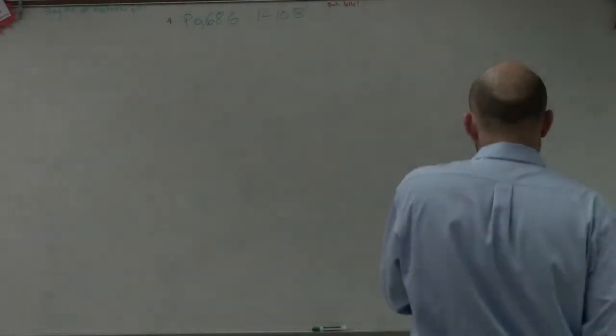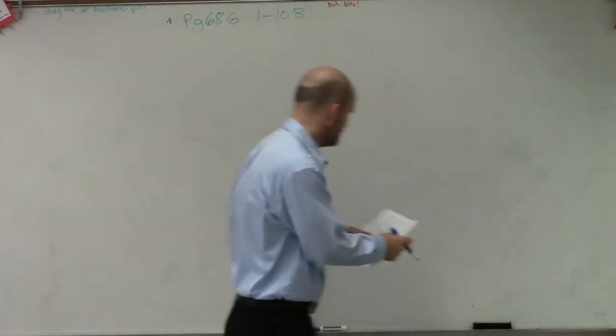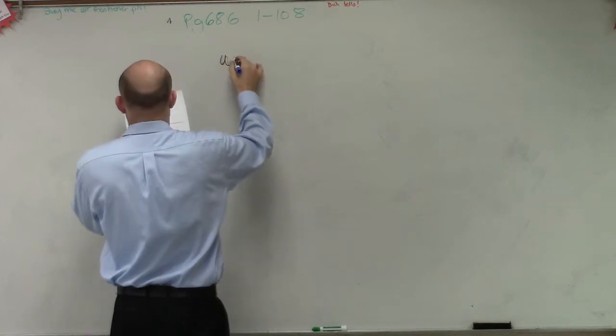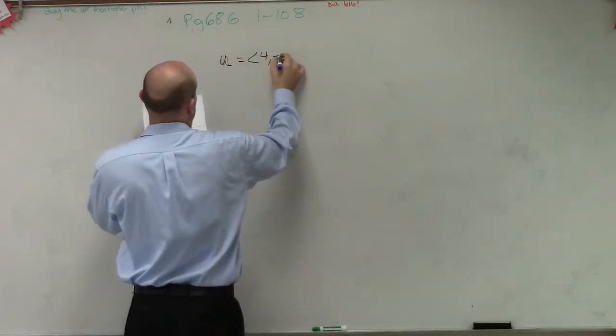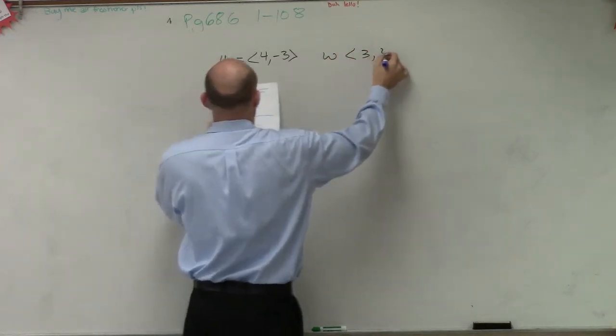So in this example, we are given u, which is equal to <4, -3>, and w, which is given as <3, 4>.